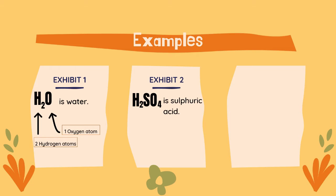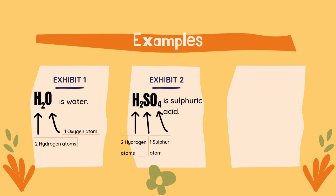Example 2: H2SO4, which is sulfuric acid. Sulfuric acid is also made up of two hydrogen atoms. S is the symbol for sulfur. No subscript means we have only one sulfur atom. And lastly, O is the symbol for oxygen. The subscript 4 means we have four oxygen atoms in sulfuric acid.